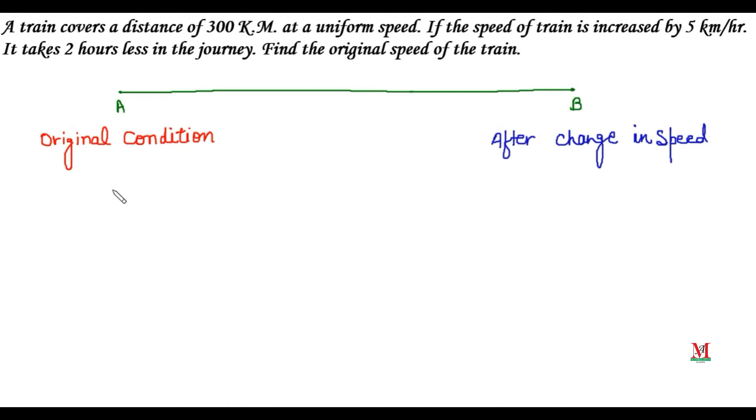Good morning to you from the Mathematics Academy. In this question, a train covers a distance of 300 kilometers at a uniform speed. The train starts from point A and terminates at point B, covering 300 kilometers in the journey. Now, in the original condition, the distance covered by the train is 300 kilometers.